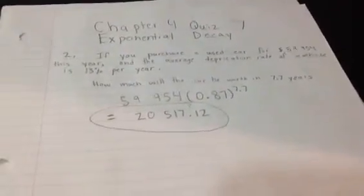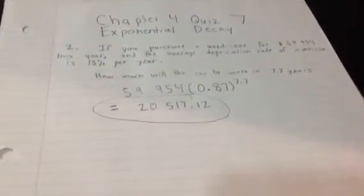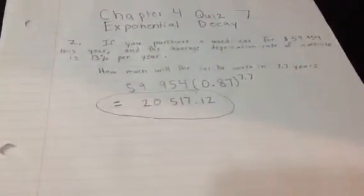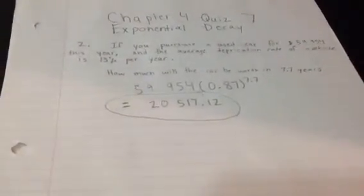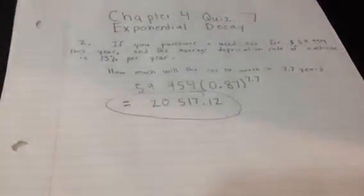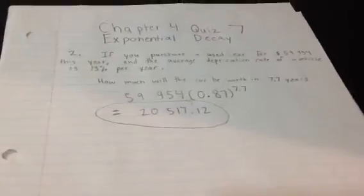First, using BEDMAS, you do 0.87 to the power of 7.7. Once you get that answer, you multiply it by 59,954, and the answer is $20,517.12. This is a pretty simple question.